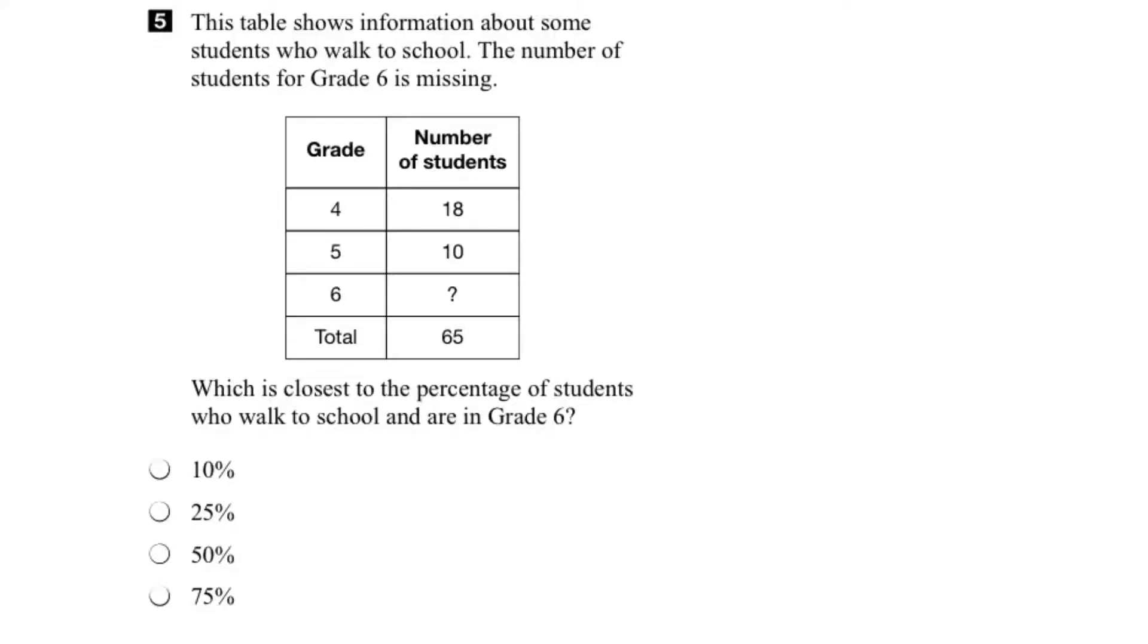Here's an alternate way to do question 5. Given the data in the table, we have to determine which of these percents is closest to the percentage of students who walk to school and are in grade 6.